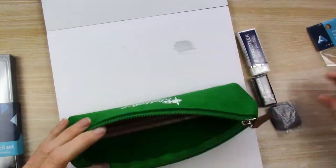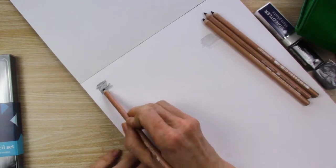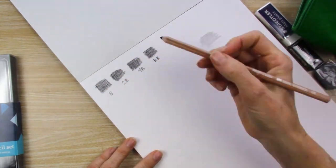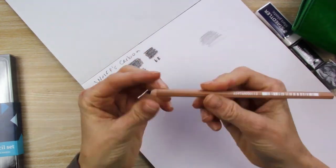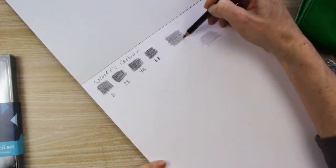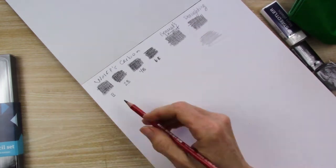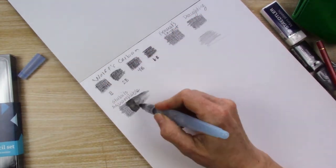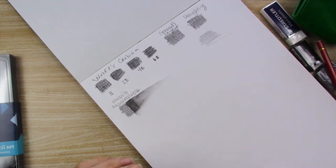You ever get tired of watching people swatch things on these YouTube videos? Unfortunately, though, it's a necessary part of the process because, especially with these, I needed to see how light and dark I could get each of them. And I knew that in a graphite drawing, your lights and darks are going to be really important. And I'm not all that great at it, but we'll see how it goes.